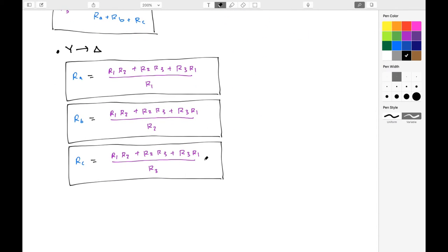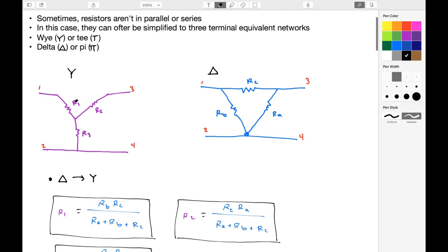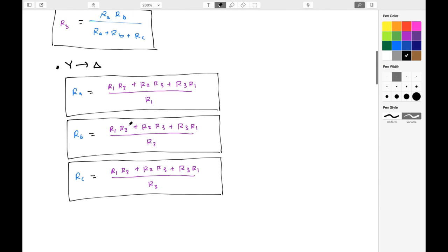For Y to delta, on the other hand, we're going to take the product of all possible Y resistors, R1, R2, plus R2, R3, plus R3, R1, and divide it by the resistor, in this case R1.